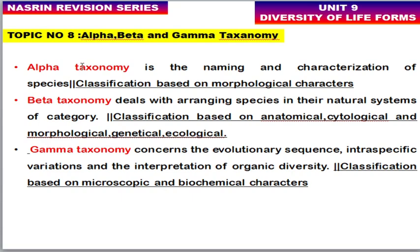Alpha, beta, and gamma taxonomy: Alpha taxonomy involves only naming and characterization of species, with classification based on morphological characters. Beta taxonomy deals with arranging species in their natural system, based on anatomical, cytological, morphological, genetical, and ecological characters. Gamma taxonomy is based on microscopic and biochemical characteristics, and concerns evolutionary history, intraspecific variation, and interpretation of organic diversity.